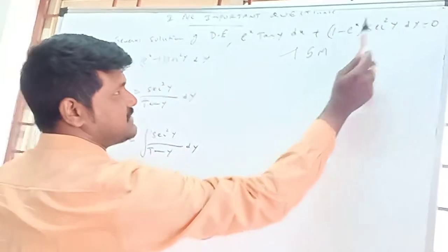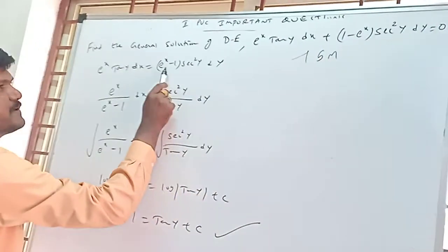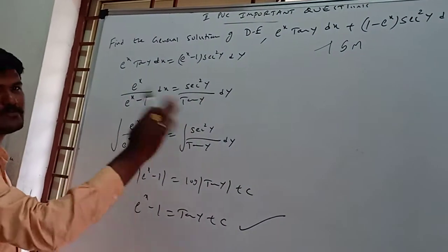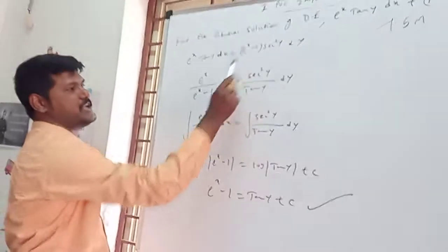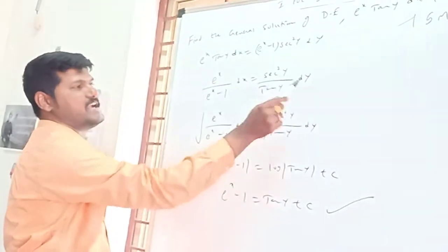Transfer this term to right hand side. Then 1 minus e^x becomes e^x minus 1. All x terms one side, all y terms one side. e^x by (e^x minus 1) dx is equal to sec^2 y by tan y dy.